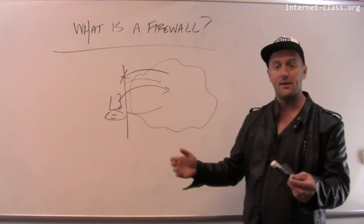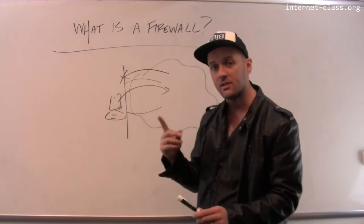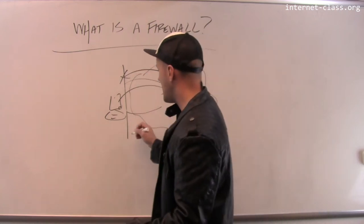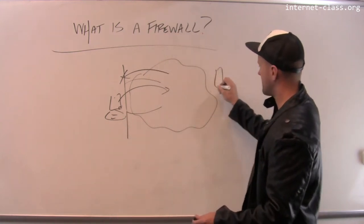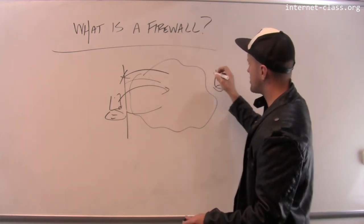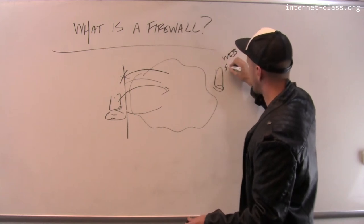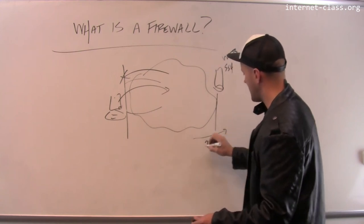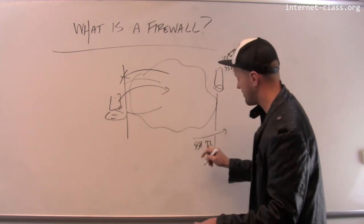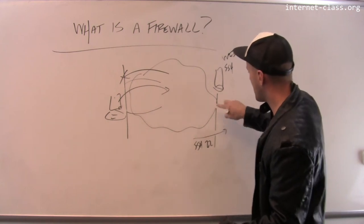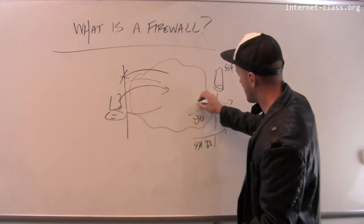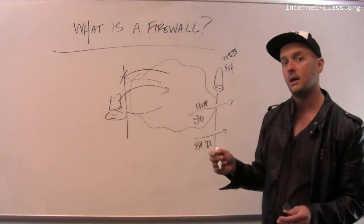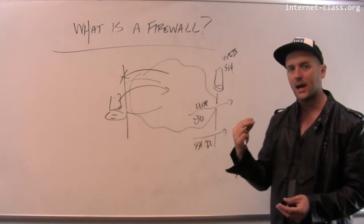If I have a machine where I want to run some servers, it's possible to poke holes in the firewall for certain ports so that certain services can run. For example, a machine running a web server and an SSH server would have a hole for port 22, which allows incoming SSH connections, a hole for port 80 for HTTP, and if it's running HTTPS I would also need a hole for port 443.